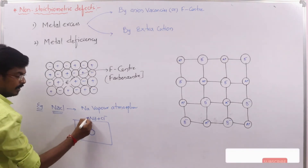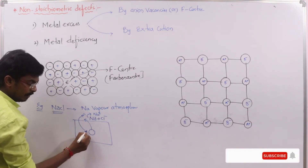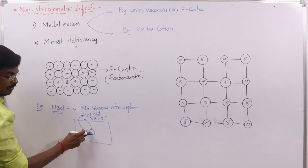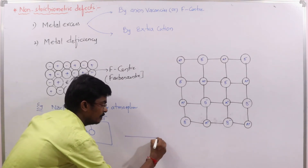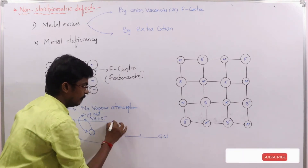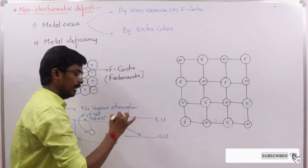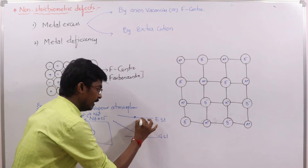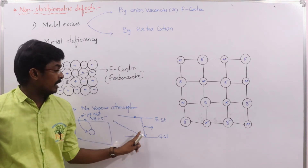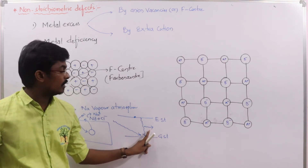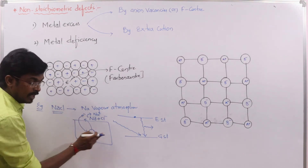The sodium loses an electron and becomes Na⁺ to combine with the Cl⁻, while the released electron diffuses into the vacancy. This electron is responsible for color formation. The electron in the ground state absorbs some radiation from the visible region, gets excited to an unstable excited state, then returns to the ground state by re-emitting complementary radiation from the visible region.